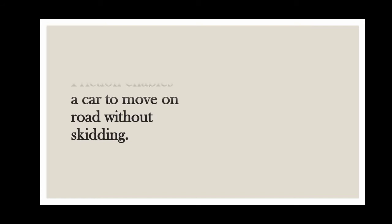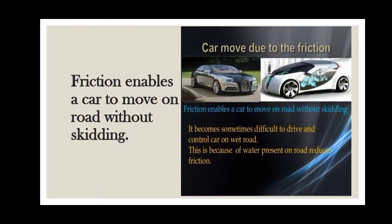The second advantage is that friction enables a car to move on road without skidding. The friction between tires of a car and the road enables a car to move forward on road without skidding. If there were no friction between the car tires and road, then the wheels of a car would spin at the same place but the car would not move forward at all.